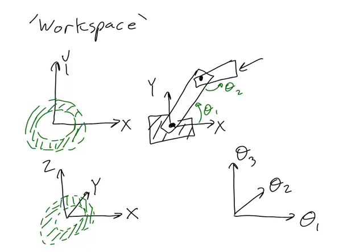So in this case theta 1 can be anything from 0 to 360 degrees. So I'll identify that space here. It's between these two lines, where this is 0 and this is 360.